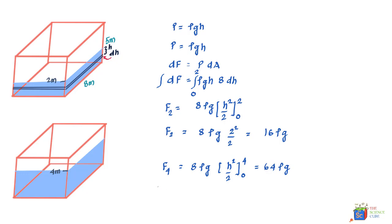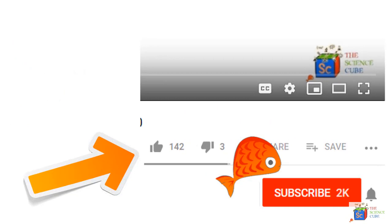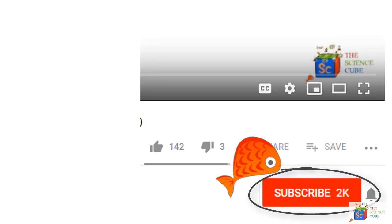The change in force is F₄ − F₂ = 64ρg − 16ρg = 48ρg. Substituting ρ = 10³ kg/m³ and g = 10 m/s², the change in force equals 4.8 × 10⁵ newtons. So when the water level rises from 2 meters to 4 meters, the additional force on the wall is 4.8 × 10⁵ N.